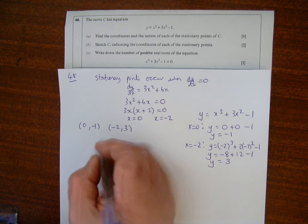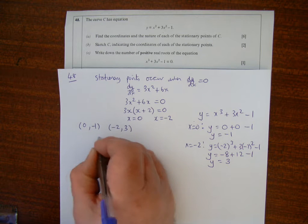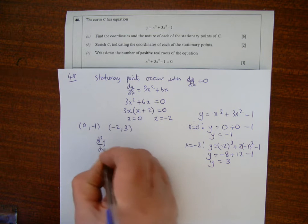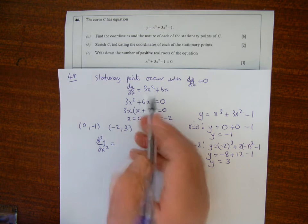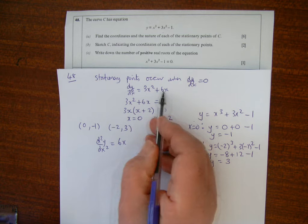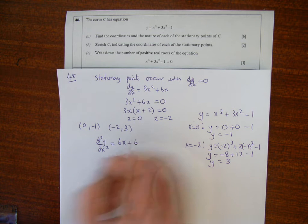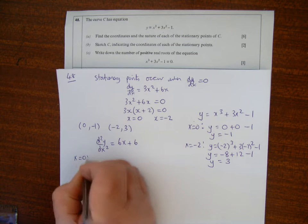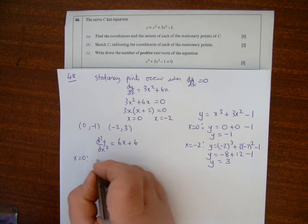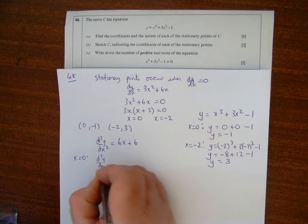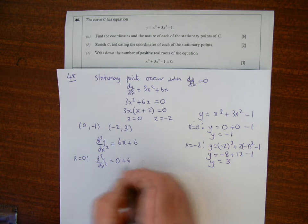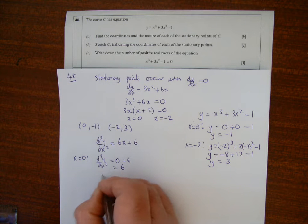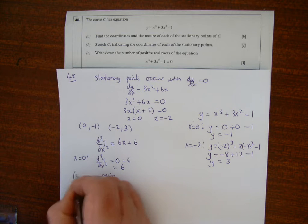To determine the nature, I'll use the second derivative test. Differentiating dy/dx gives d²y/dx² = 6x + 6. Substituting the values: if x = 0, d²y/dx² = 6(0) + 6 = 6, which is positive, so that's a minimum at (0, -1).